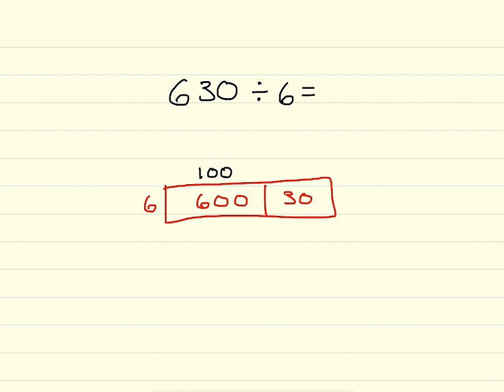Next, 30 divided by 6 gives you the partial quotient of 5. And if I add my two partial quotients together, I get 105. Therefore, 630 divided by 6 equals 105.